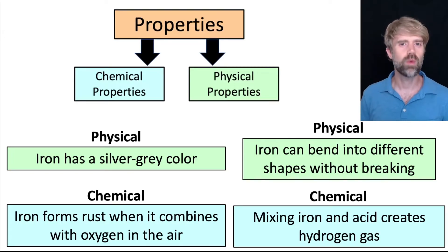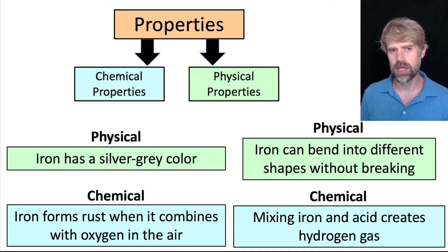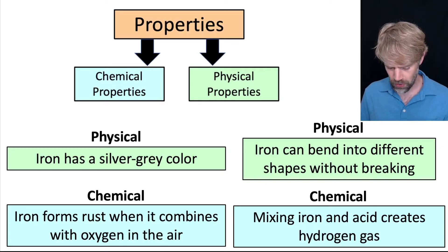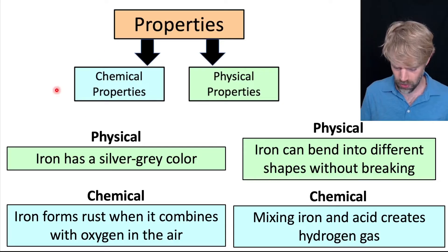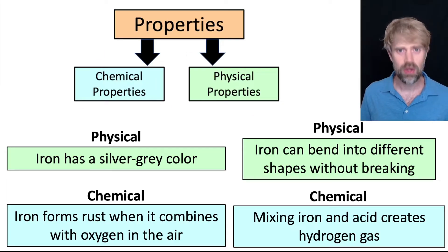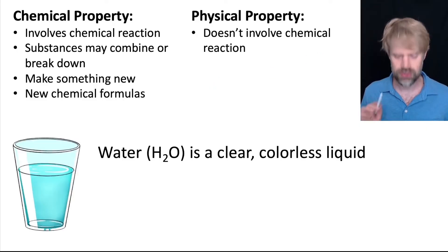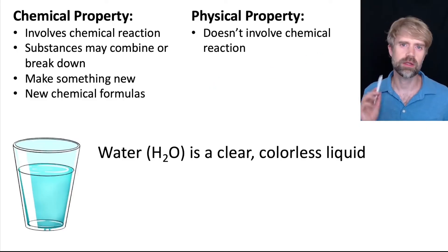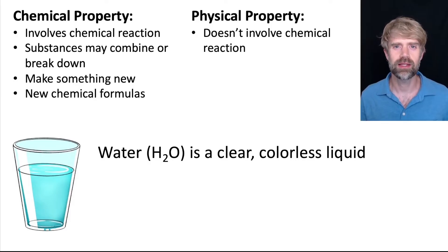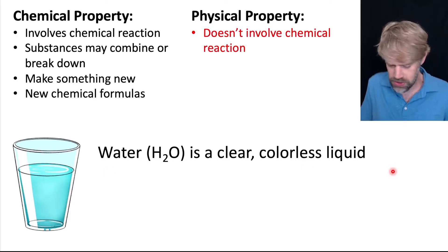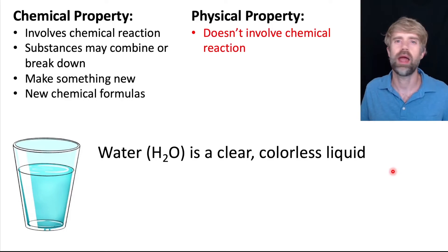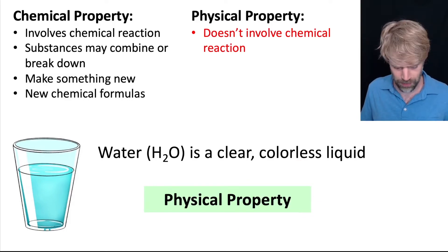Now that we've done a quick introduction to chemical and physical properties, let's look at a few more examples and figure out whether they are chemical or physical. We'll also look at some TEAS practice problems. We'll keep this little cheat sheet up here as you get a hang of this. First off, water is a clear, colorless liquid. Well, there's no chemical reaction here — this is just how water looks, clear and colorless, which means it's a physical property.